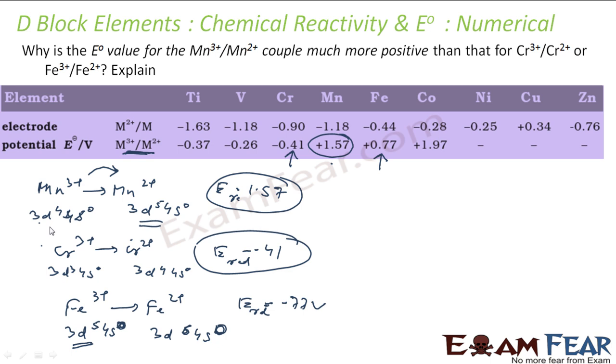This reaction is not that much favored. In case of Mn³⁺ to Mn²⁺, there is a large amount of energy released because it goes from totally unstable to totally stable. Thus we have high value of E reduction.